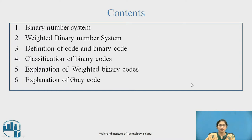Contents. First is the binary number system; second is the weighted binary number system; third is the definition of code and binary code; fourth is the classification of binary code; fifth is the explanation of weighted binary code; and sixth is the explanation of gray code.